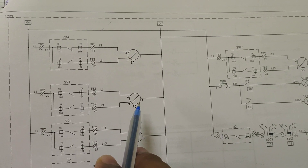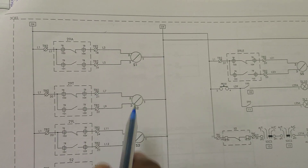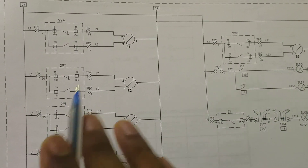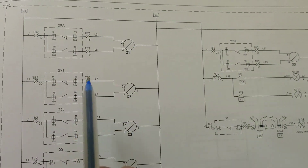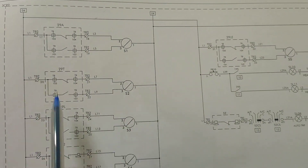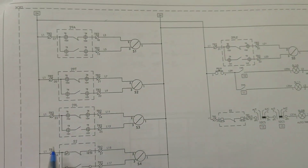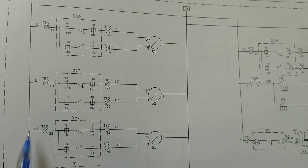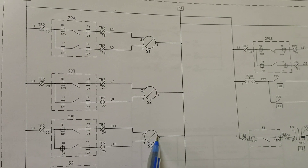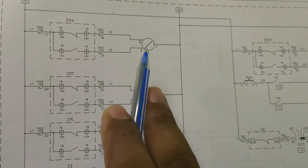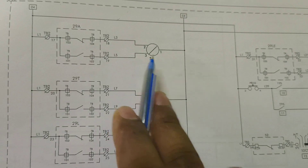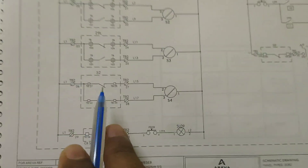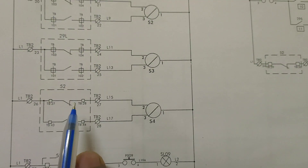After utilization or proper completion of the job, if we want to open the transfer bus side isolator, this contact will be NO and this contact will be NC, and it will go to the OFF position. From the control panel we can observe that the line side isolator has been opened successfully. This is 29L — the line side isolator — with the same function. L1 is the positive side and L2 is the negative side.